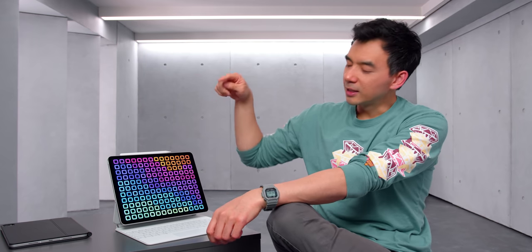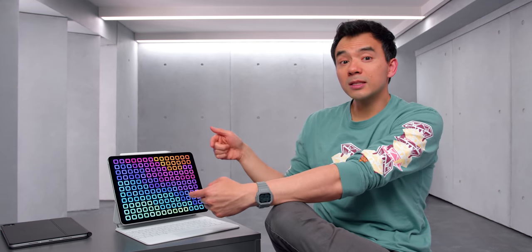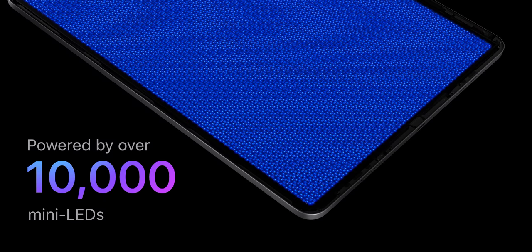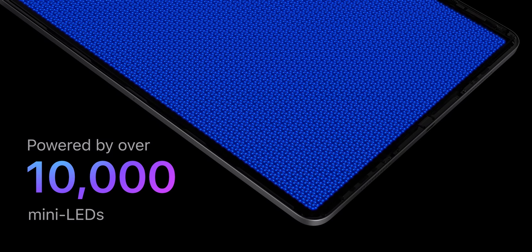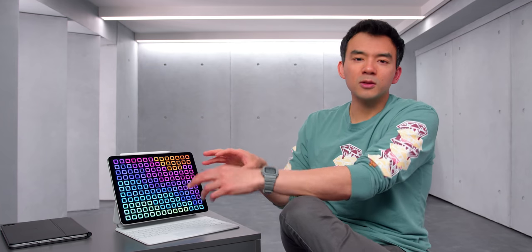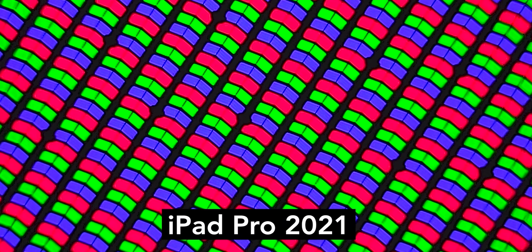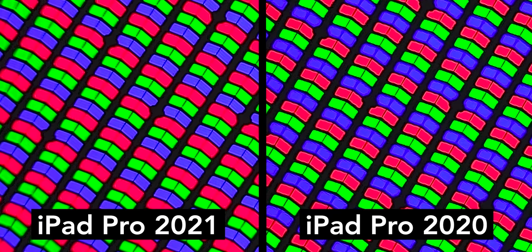The first thing, the headlining feature is the Liquid Retina XDR display on the big boy. So this only exists on the 12.9 inch model and it's Apple's first device with mini LED display tech. So mini LEDs refer to backlighting technology. It's not the RGB matrix. It's nothing to do with the actual pixels themselves. It's just the backlighting behind the screen. So if we look at the pixels on this display and you compare to the pixels on the display from last year's iPad Pro, they look basically identical, but they were lit very differently.